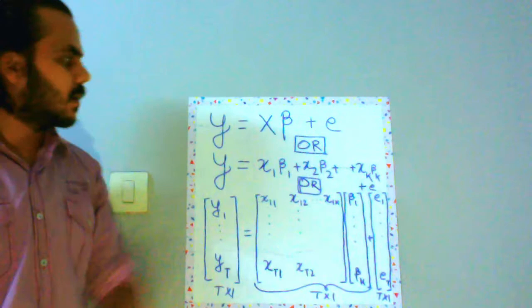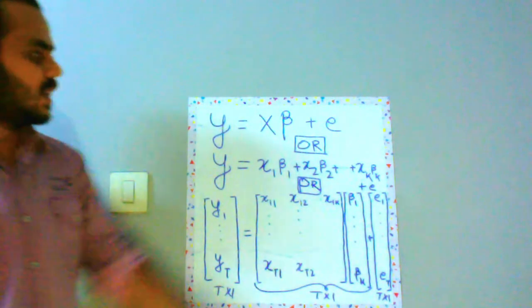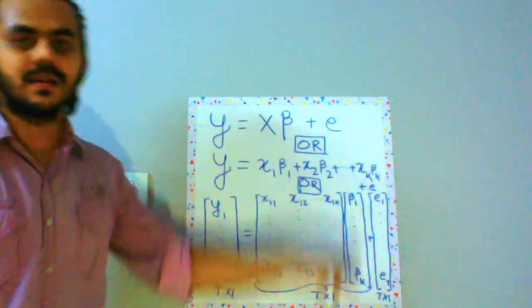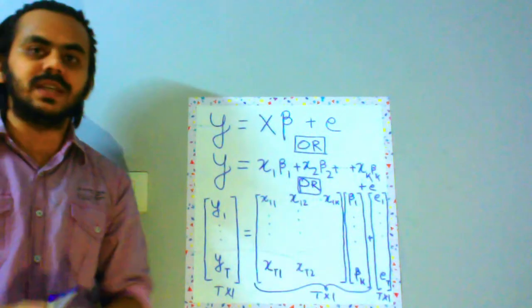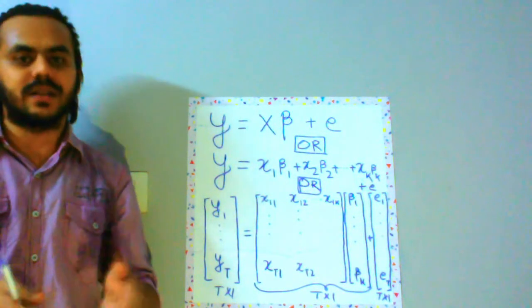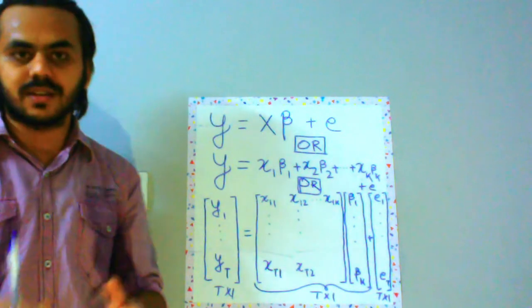Here we will estimate beta which means we will estimate this vector, beta vector which has k entries over here. Beta 1 denotes the intercept term and the rest denotes the coefficient of predictors. So that will be in the next lecture.